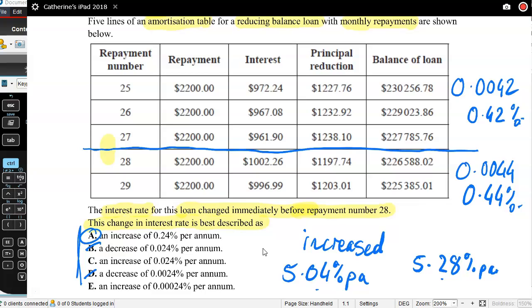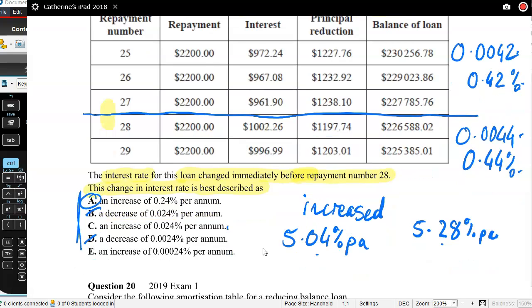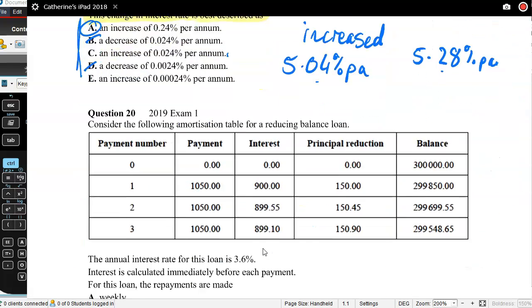Now 29% of the state answered correctly. 37% of the state answered C. So what happened there is that people were looking at the decimals and not the percentages, and that's how they got that amount. So be really, really careful there with what you are working with. Look at that really carefully.